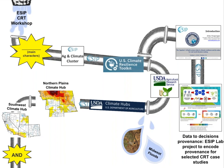Those two components flow together and came out as the ESIP CRT workshop. From there, we identified several main characters: the Agriculture and Climate Cluster, the U.S. Climate Resilience Toolkit, the USDA Agriculture Research Service, and the Climate Hubs from the USDA — the Northern Plain Climate Hubs and the Southwest Climate Hubs. Those went through the ESIP pipeline, and at the same time we also had an offshoot: creating a data-to-decisions provenance with the ESIP lab project to encode provenance for the selected CRT case study.